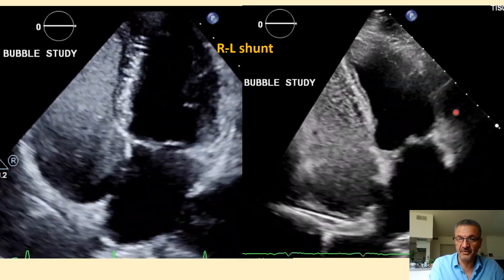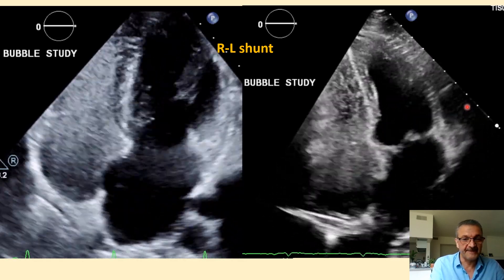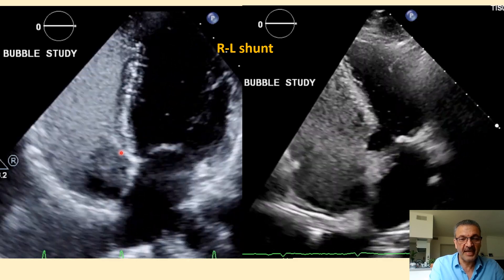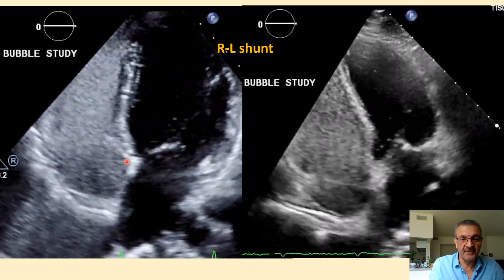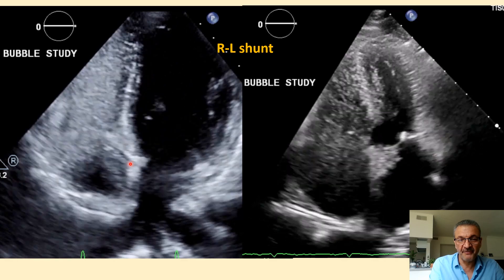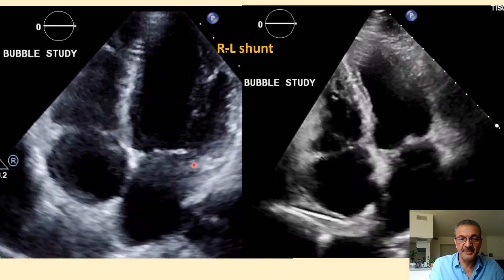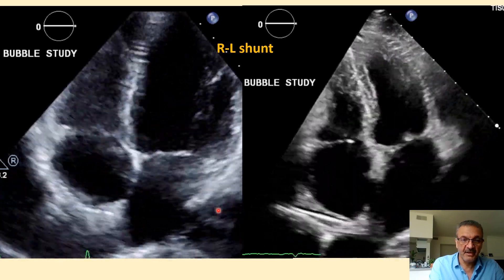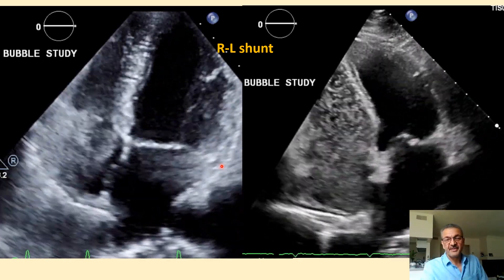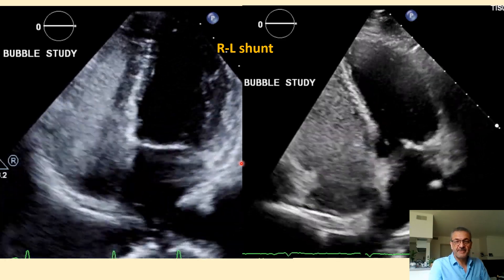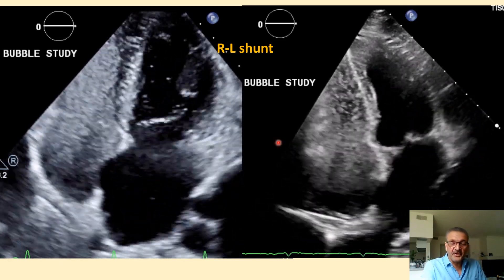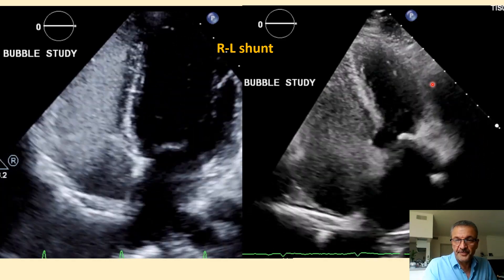There you go — you can see it there. This patient: bubbles show up right after coughing. I asked the patient to cough, and right after the cough, bubbles suddenly rush into the left side. So in this case, we have a right-to-left shunt.